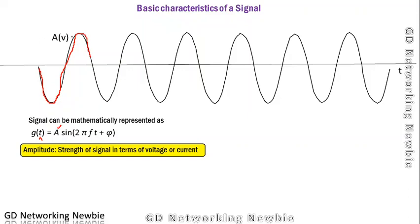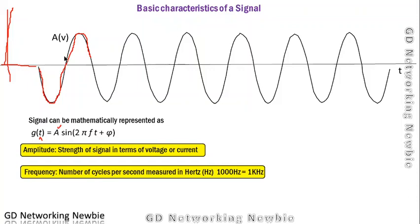On the y-axis, we have shown the amplitude of this sine wave or sine signal. The A represents the amplitude of the signal. We also have a term that is frequency.